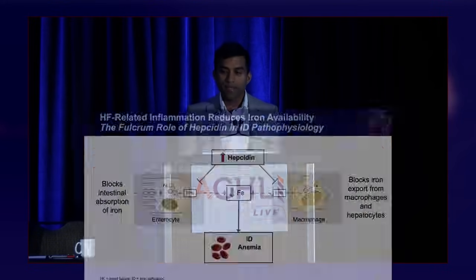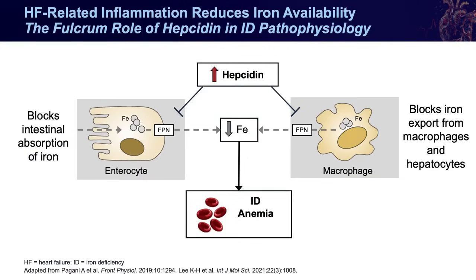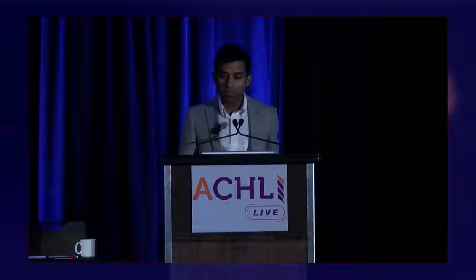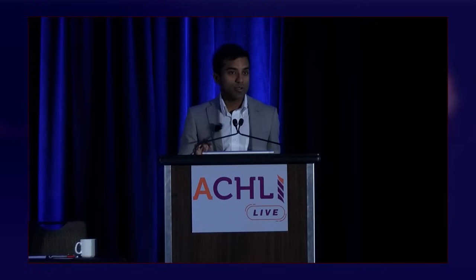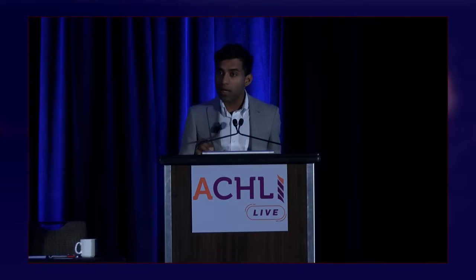The master regulator of inflammation in iron deficiency and heart failure is hepcidin. In inflammatory states like heart failure, hepcidin levels increase, blocking the initial absorption of iron via ferroportin and also blocking ferroportin's ability to facilitate iron entry and exit in end-organ tissues such as the reticular endothelial system.